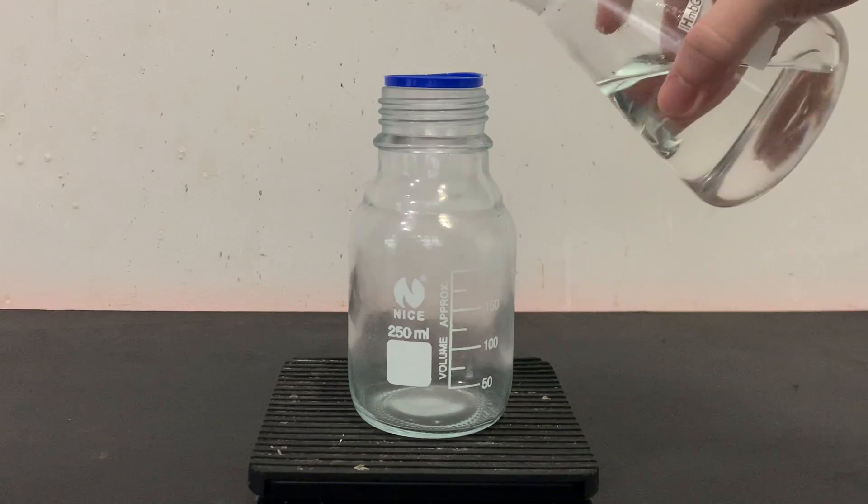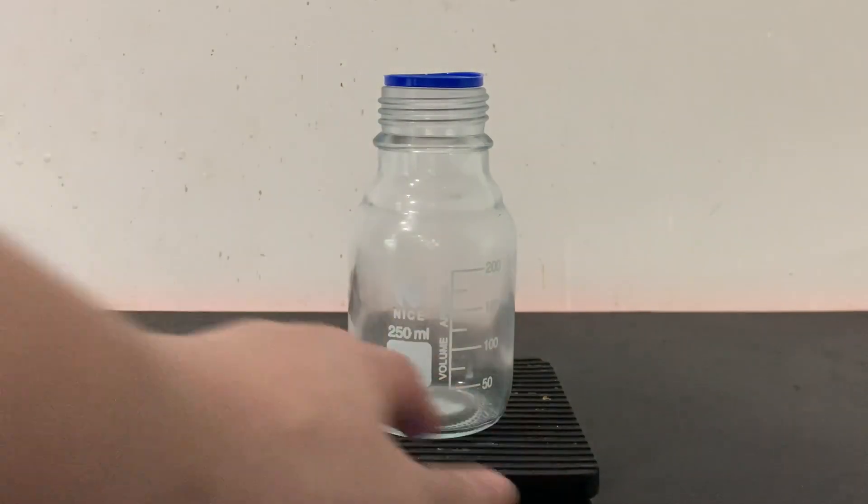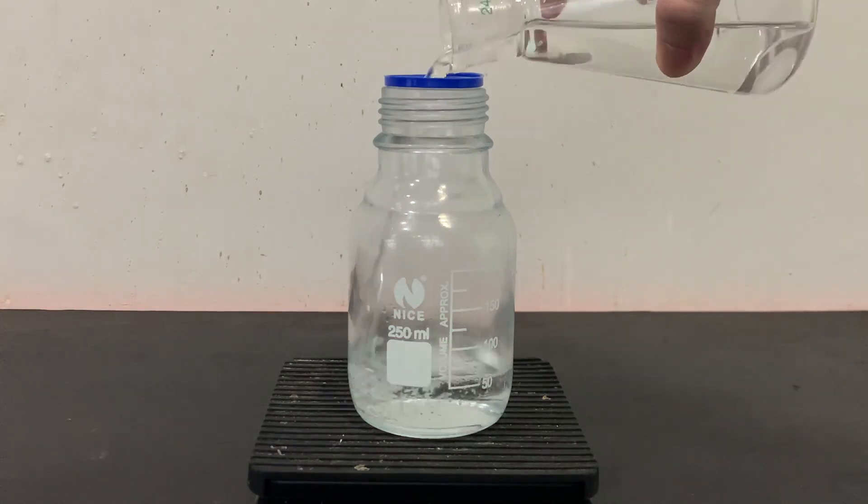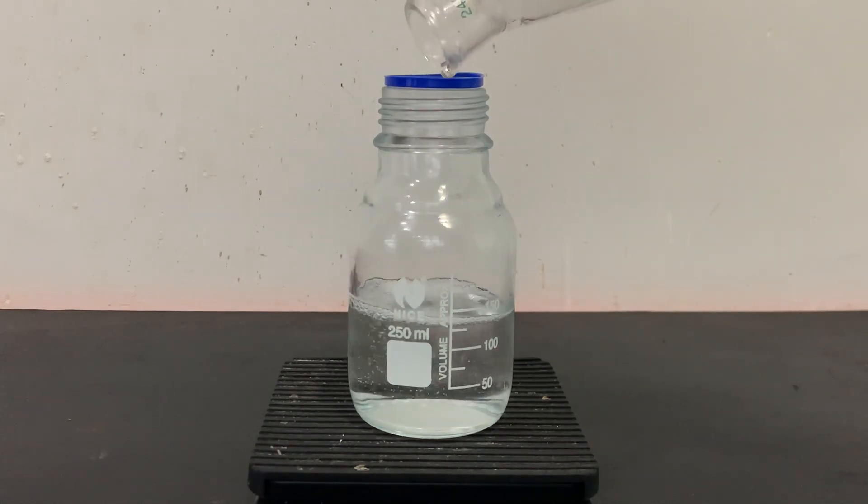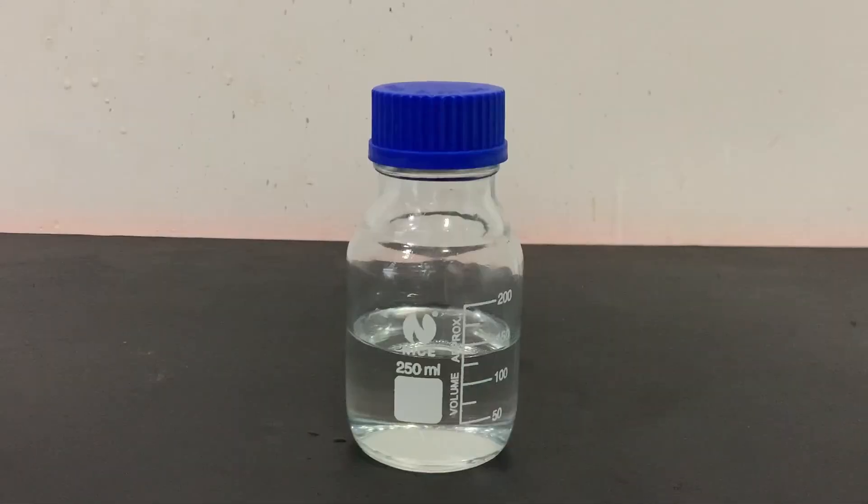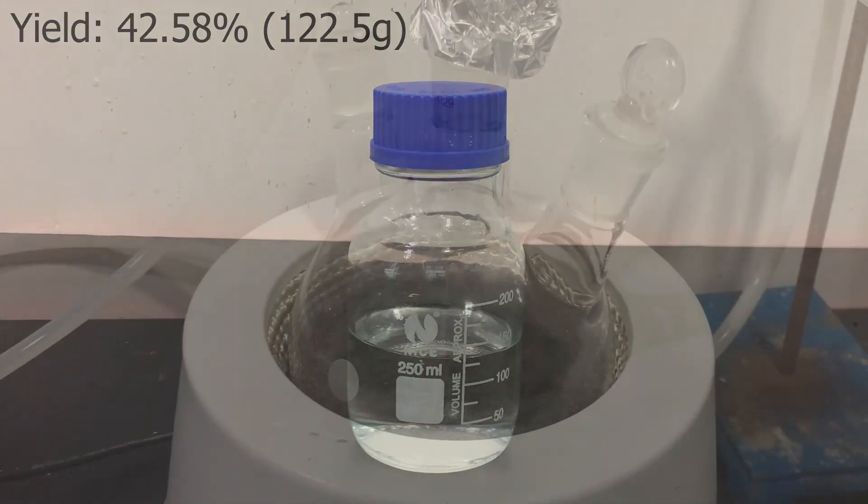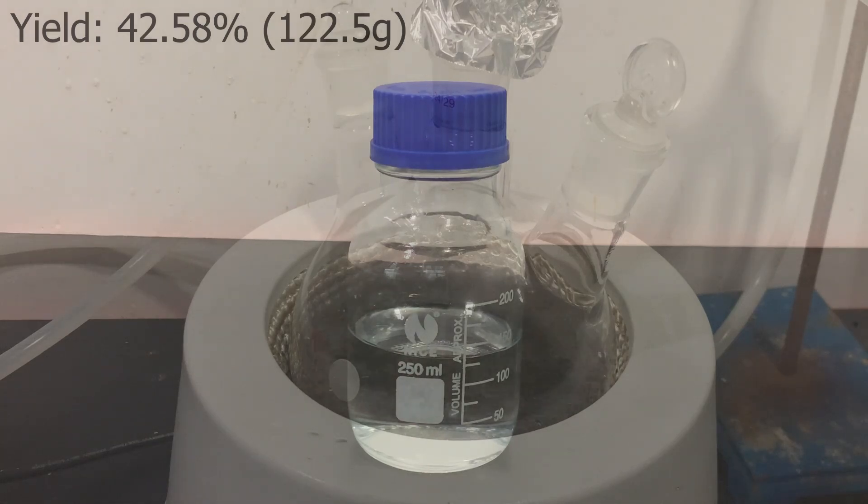The mass of the collected cyclopentanone was then measured. The yield came out to be lower than expected at 42.58 percent. From what I can think of, I stopped the dry distillation of the adipic acid too early which pretty significantly lowered the yield.